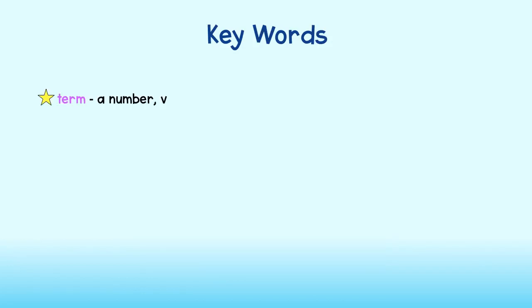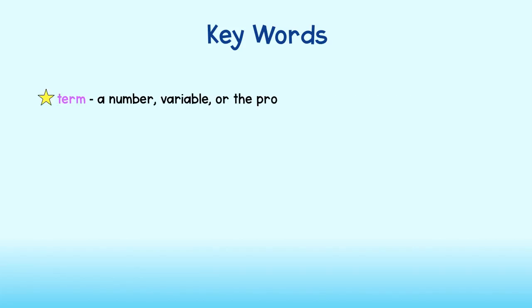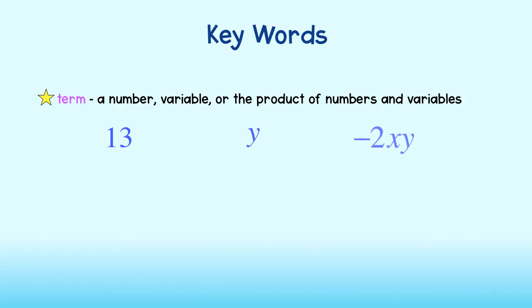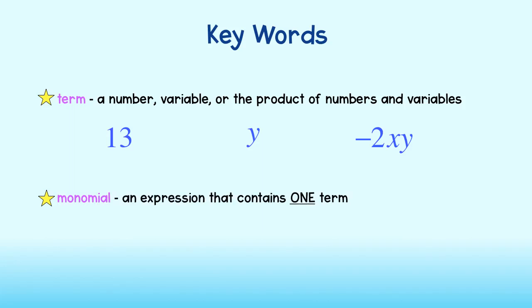But before we jump into the rules let's take a look at some new words. The first one is term. A term is just a number, variable, or the product of numbers and variables. A monomial is just an expression that contains one term. Since each example above is just one term, they are all examples of monomials as well. We can use the properties of exponents to simplify monomials.